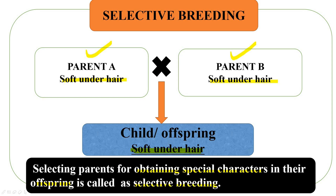Let's understand selective breeding with an example. Suppose both your parents are tall — there is a high probability that you will also be tall. Similarly, if both parent sheep have only soft under hair, then the child will also have only soft under hair. And we need the soft under hair for obtaining wool fiber.